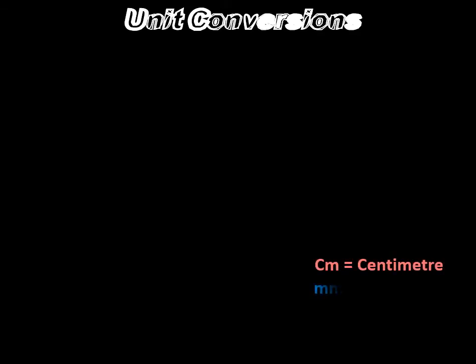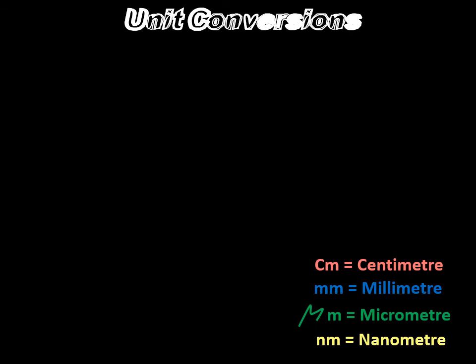Now let's move on with unit conversions. This is pretty simple. Let's remember these as red, blue, green and yellow. Cm stands for centimeter, mm stands for millimeter, the slanted mu thing is a micrometer and then we have nm which stands for nanometer. Just remember red to be the largest, then blue the second largest and so on. Let's make this easier to be understood.